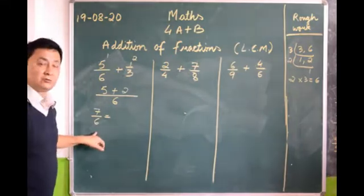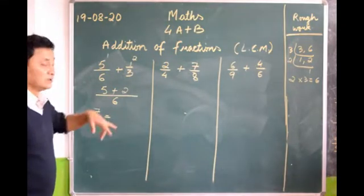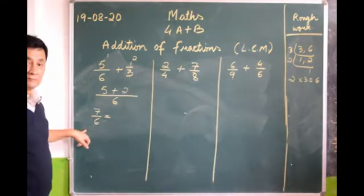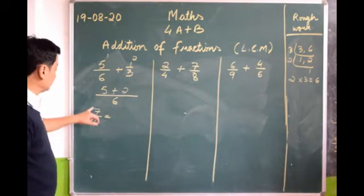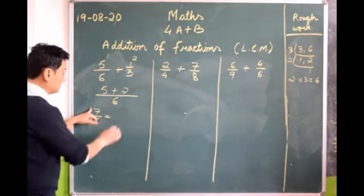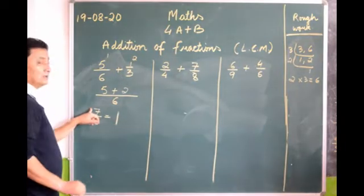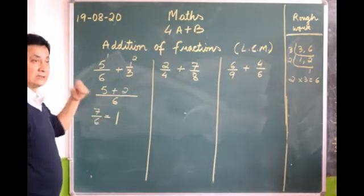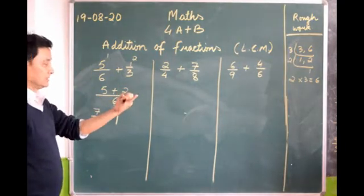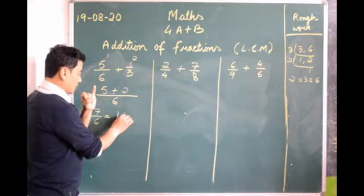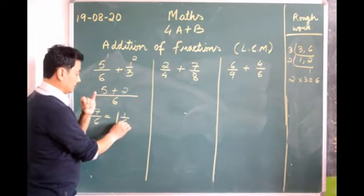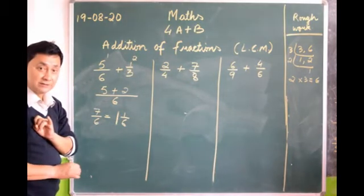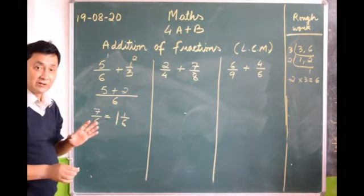Otherwise, many of you can do it mentally: 6 goes into 7 once, 6 ones are 6, remainder 1, giving 1 and 1/6. Did you understand? Some of you have understood.